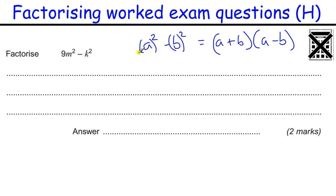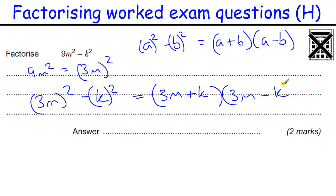So 9m squared. If I think about 9m squared, that is actually 3m all squared. So if you like, this is our a squared gives us 9m squared. So if I've got 3m all squared minus k all squared, and that can be rewritten as this first bracket, 3m plus the k. And then 3m minus the k. And when you can spot these, they're really straightforward.